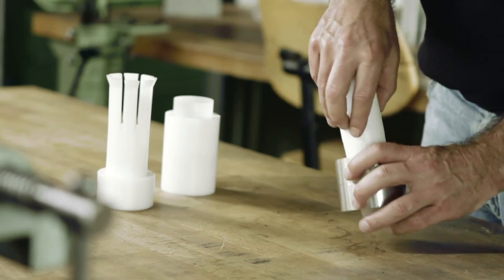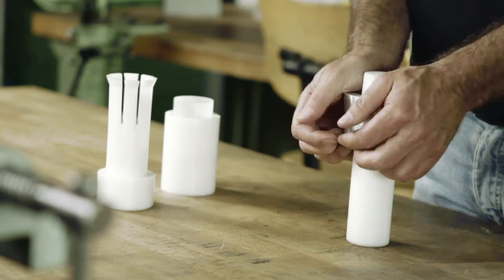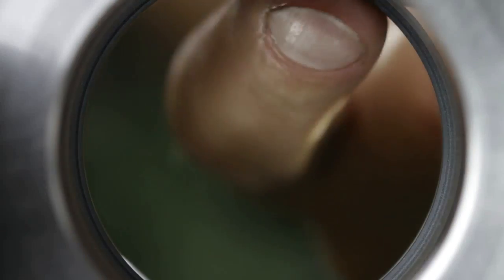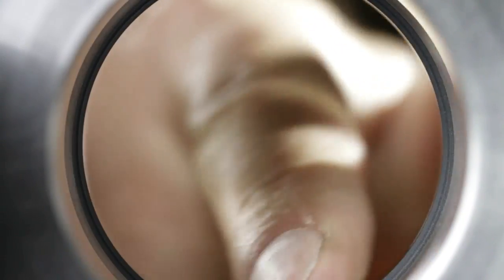The inner diameter of turcon rod seals must be calibrated in the final stage by slowly pushing a tapered calibration mandrel through the assembled seal. The seal will now sit tightly in the groove.